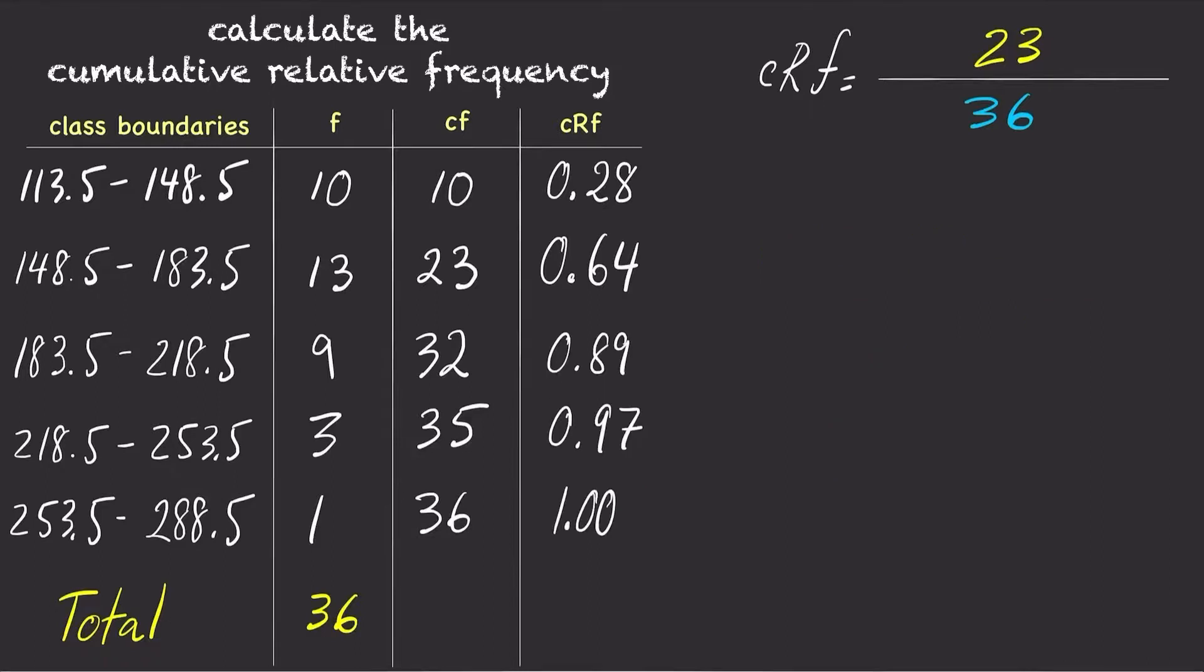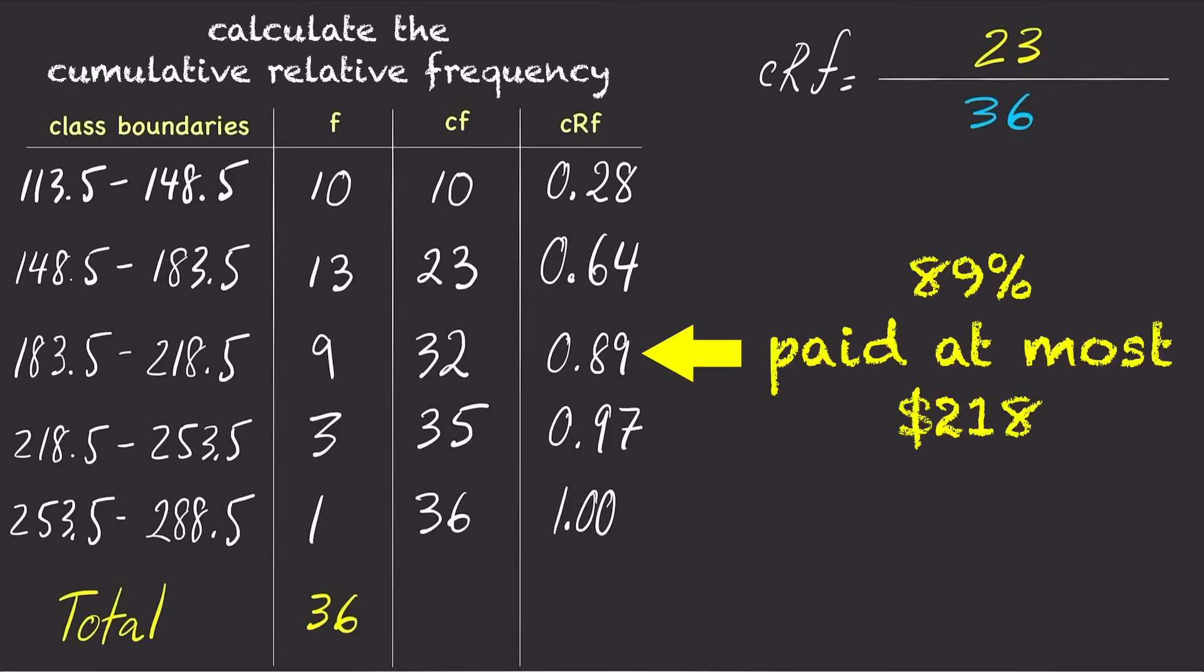A cumulative relative frequency of 0.89 for the third class means that 89% of the data points are in the third class and every class before it. In other words, 89% of the health insurance premiums paid by people in their late 20s in 2014 were at most $219.